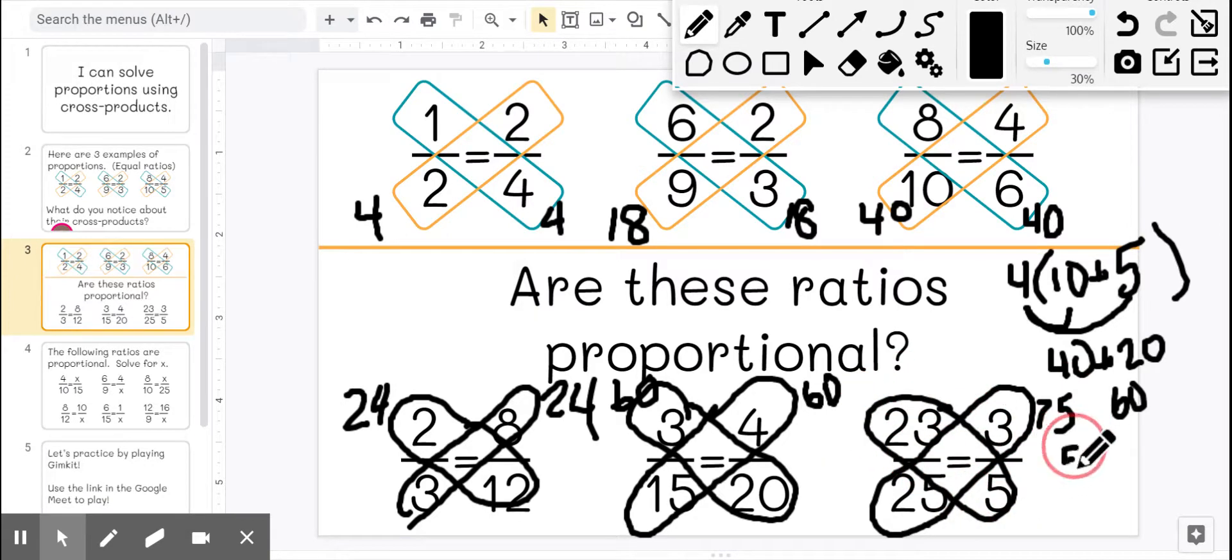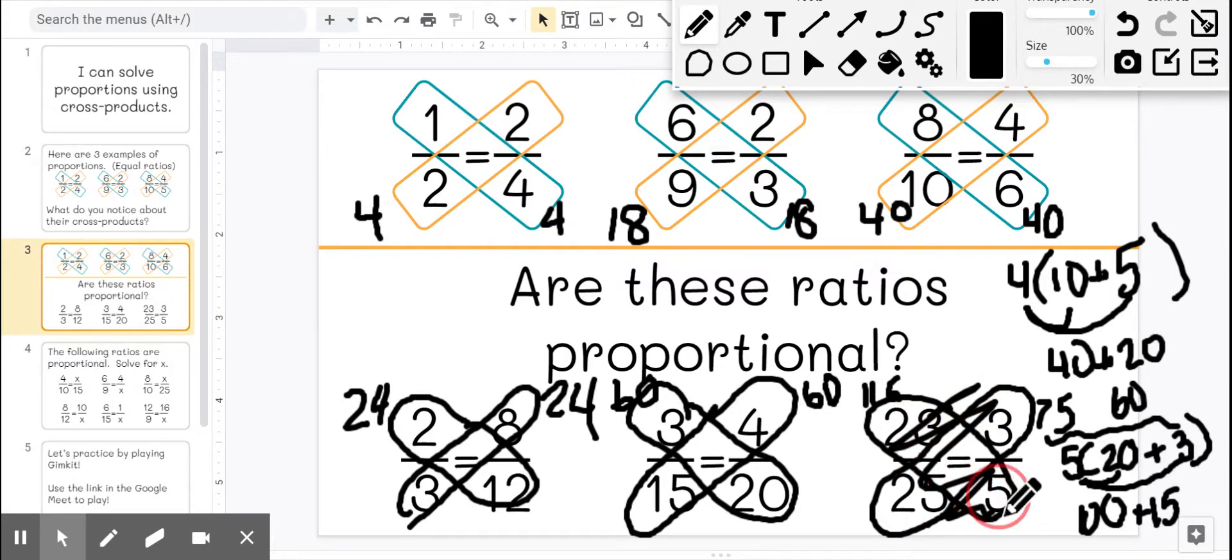Again, I'm going to distribute. So I'm going to do 5 times 20 plus 3. So 5 times 20 is 100. And 5 times 3 is 15 more. So 115. This one is not a proportion.